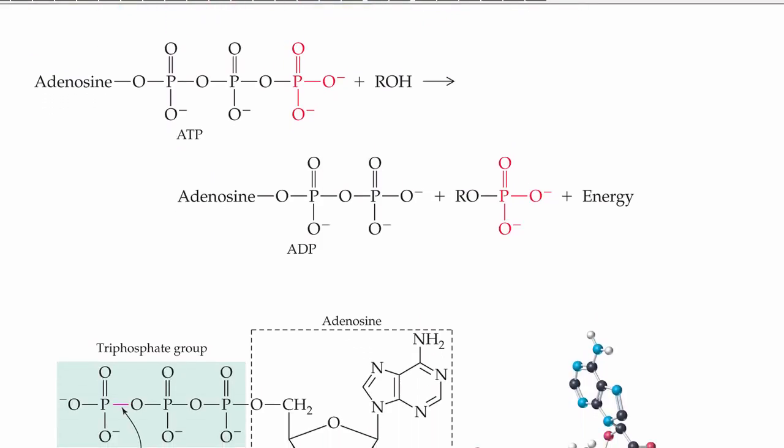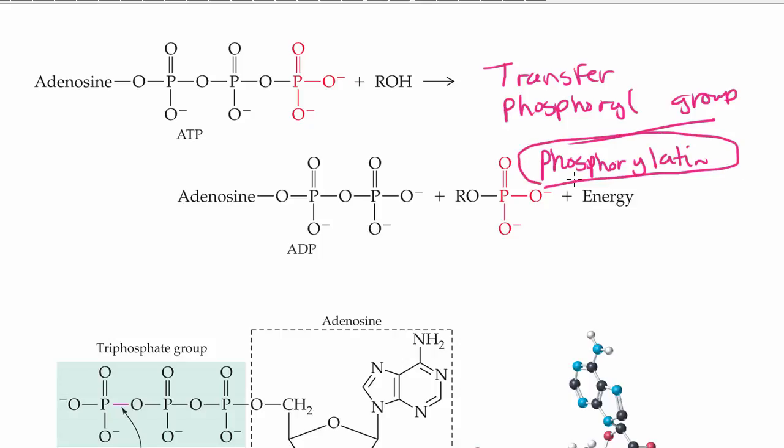Here's something that I want you to take a look at. It turns out that when we transfer a phosphoryl group from one molecule to another, this is called phosphorylation. So, the transfer of a phosphoryl group from one molecule to another is called phosphorylation.